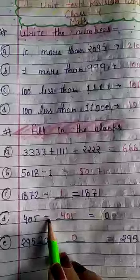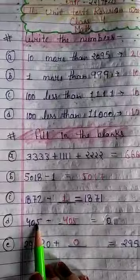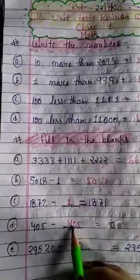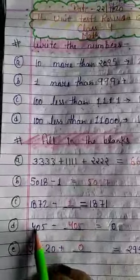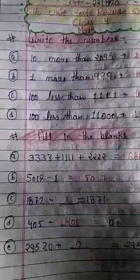405 minus dash equal to 0. अब हमें 405 में से कितना minus करना है कि वो 0 answer आए? तो हमें कितना minus करना पड़ेगा? 405. इतनी ही exact संख्या जो हमें minus करनी पड़ेगी उसमें से ताकि वो 0 हो जाए answer हमारा।